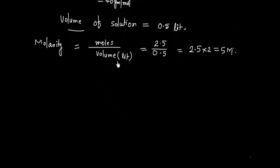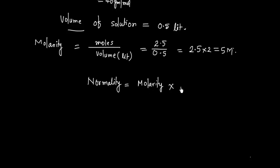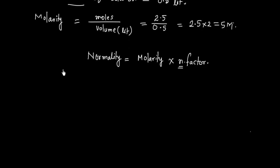We also need to calculate normality. The formula is: normality = molarity × n-factor. For acid-base reactions, the n-factor is the number of H⁺ ions given by an acid, or the number of OH⁻ ions given by a base.